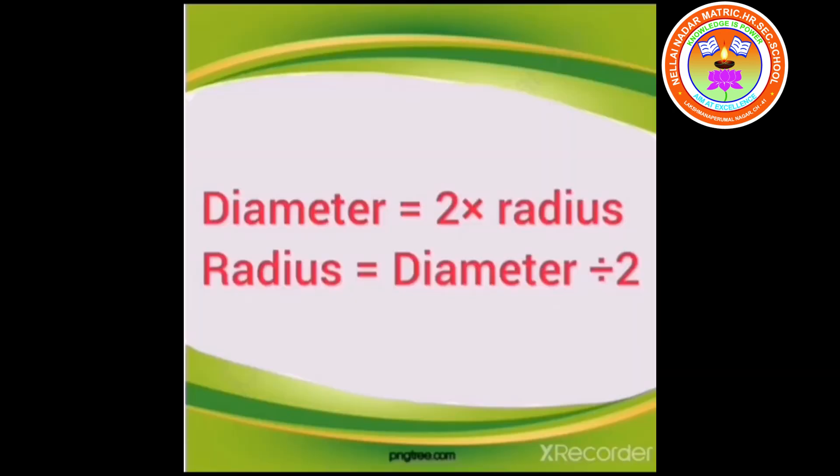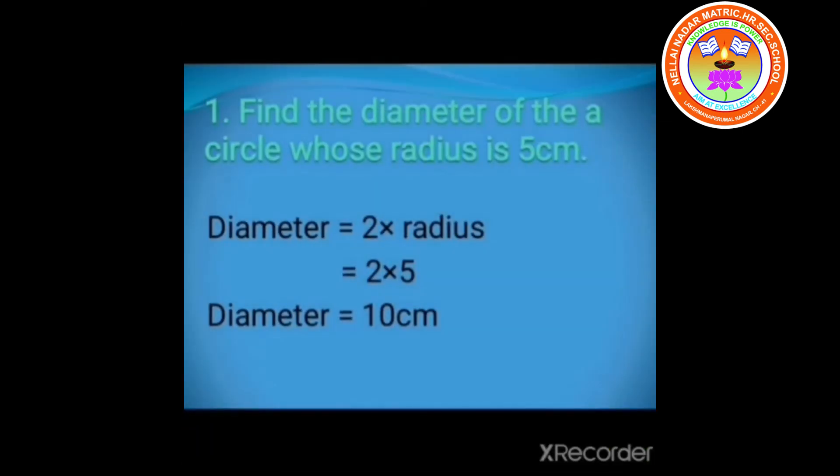Next, I have explained the formulas for diameter and radius. What is the formula? Diameter is equal to 2 times radius. Radius equals diameter divided by 2.